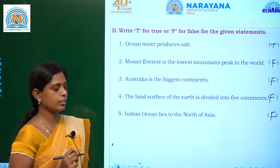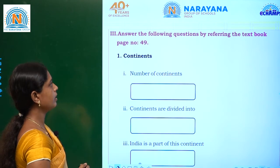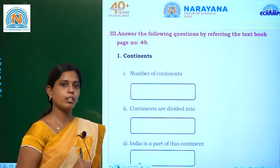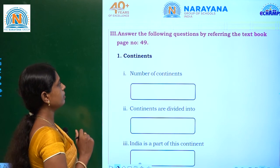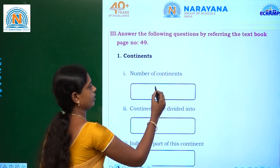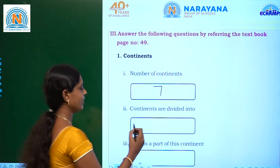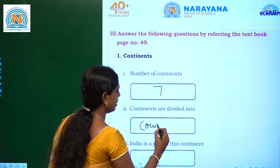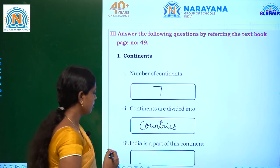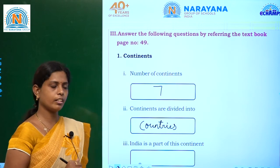Can we move on to the next section? Answer the following questions by referring to the textbook page number 49. First: number of continents — how many continents are there? Seven. Continents are divided into countries.